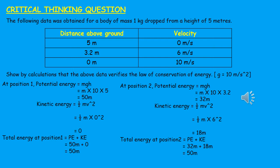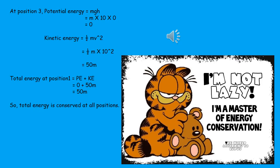At position 2: PE = mgh = 1 × 10 × 3.2 = 32 J. KE = ½mv² = ½ × 1 × 6² = 18 J. Total energy at position 2 = PE + KE = 32 + 18 = 50 J. At position 3 (just above ground): PE = mgh = 1 × 10 × 0 = 0 J. KE = ½mv² = ½ × 1 × 10² = 50 J. Total energy at position 3 = PE + KE = 0 + 50 = 50 J. So the total energy is conserved at all positions of its motion.